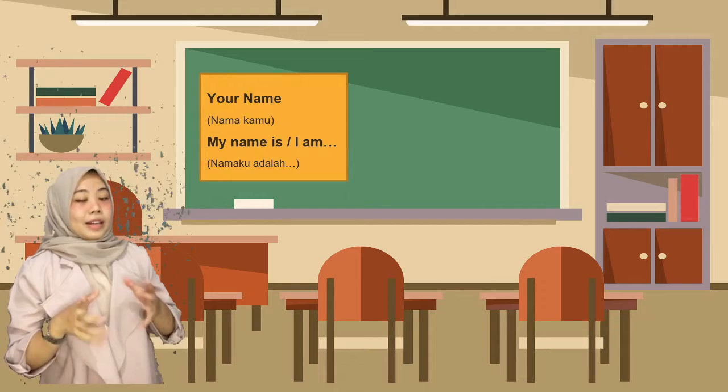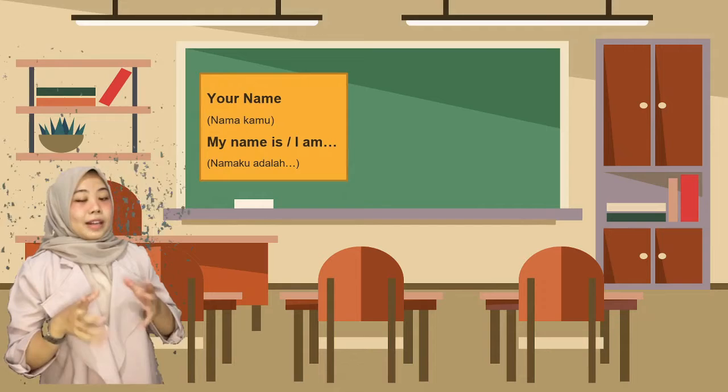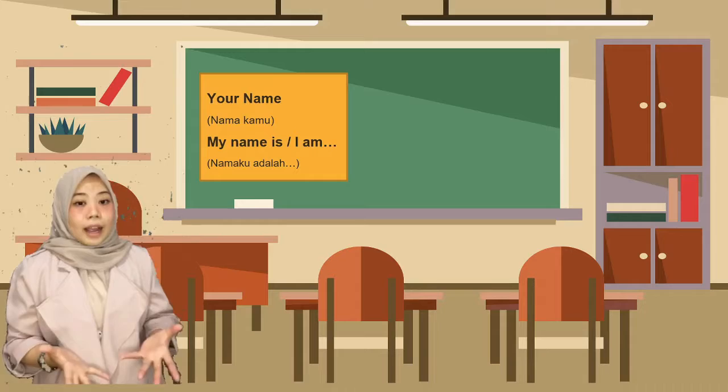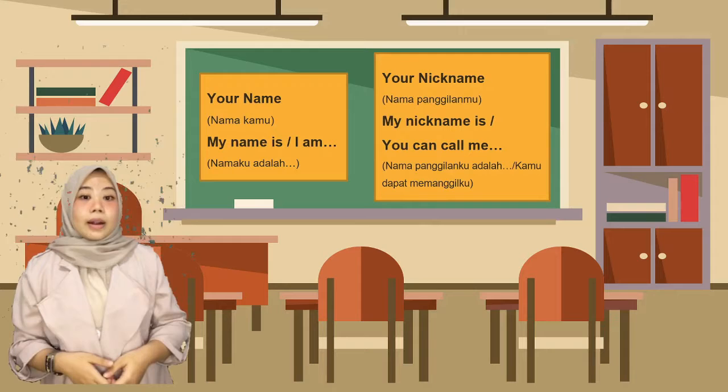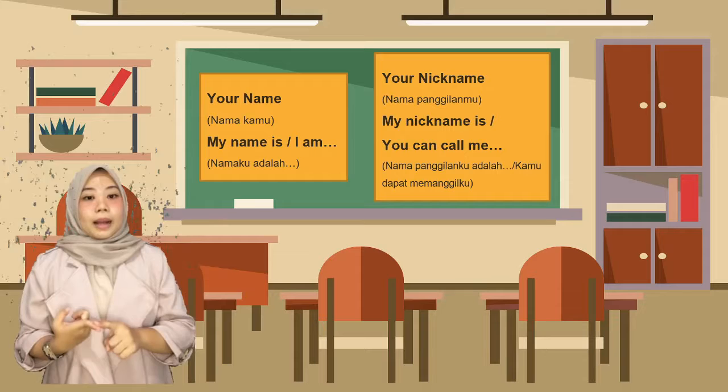You can mention your name first. For example, 'My name is Maria Ulfa,' or you can say 'I am Maria Ulfa.' Then follow your nickname. You can say 'You can call me Maria,' or 'My nickname is Maria.' Jadi, kalian bisa pilih salah satu dalam menyebutkan nama lengkap kalian atau menyebutkan nama panggilan kalian.